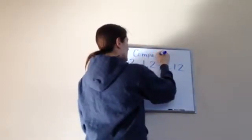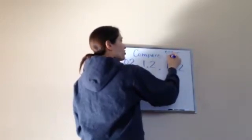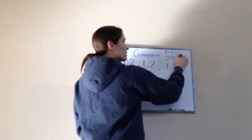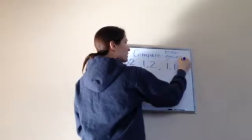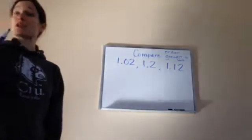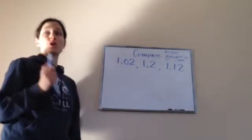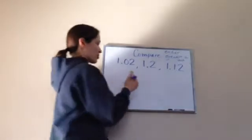Compare these numbers and order them from the greatest to the least. Your very first step is going to be to do what I told you. Whenever you're comparing them, what should you do first? Line up the decimals. Line up the decimals. So let's do that.